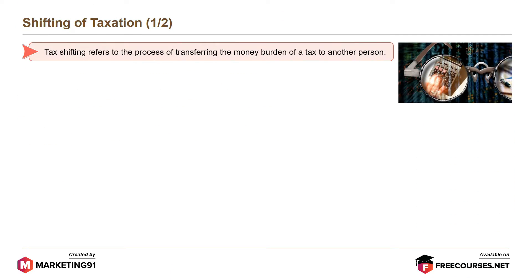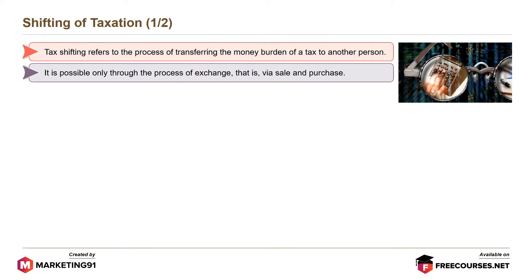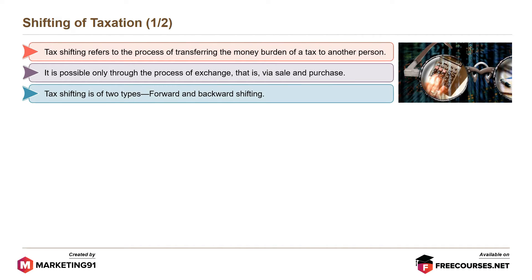Tax shifting refers to the process of transferring the money burden of tax to another person. It is possible only through the process of exchange, that is, via sale and purchase. Tax shifting is of two types: forward and backward shifting.